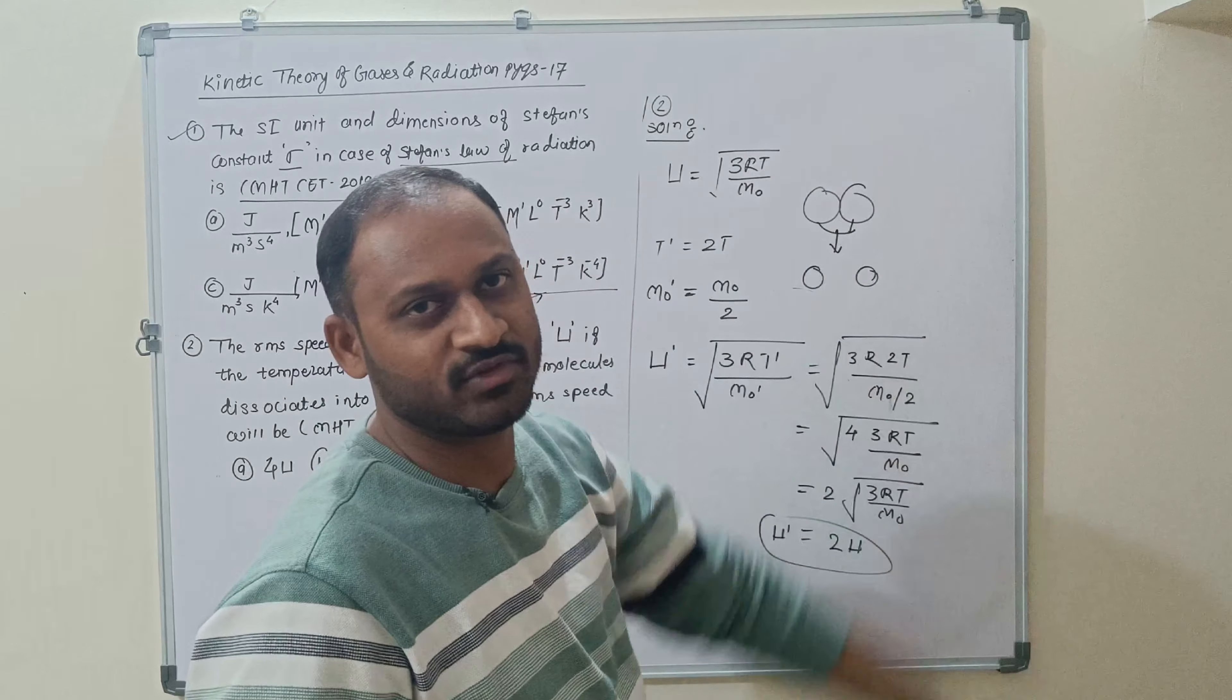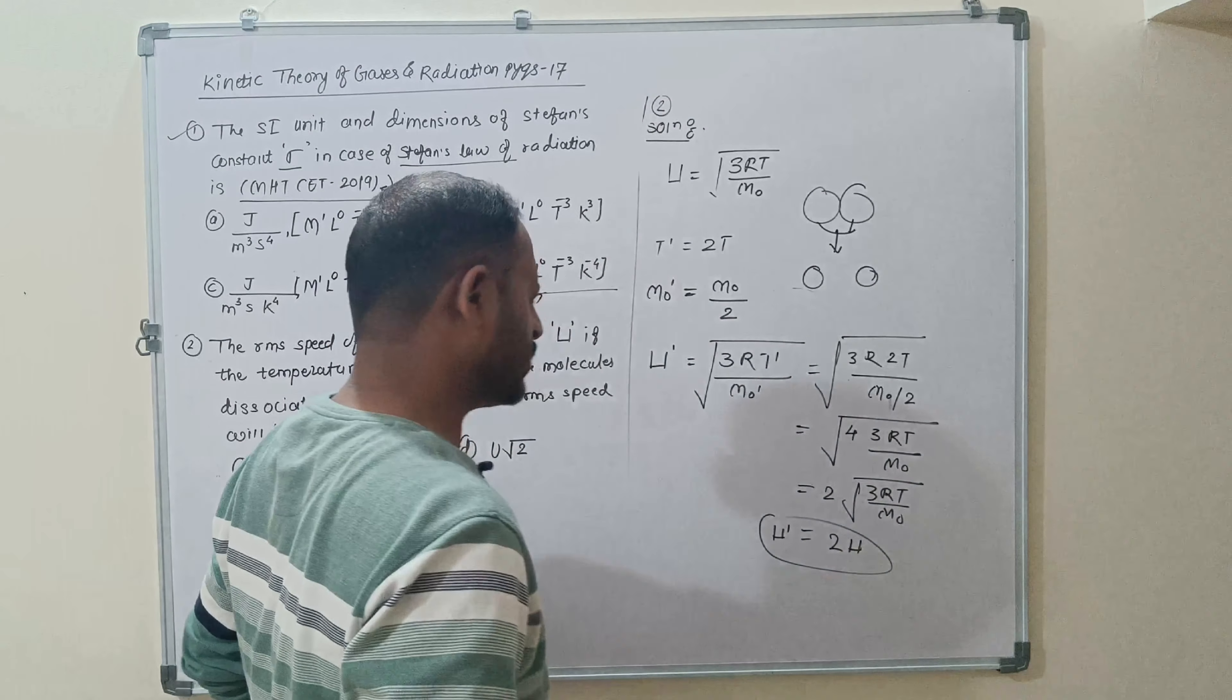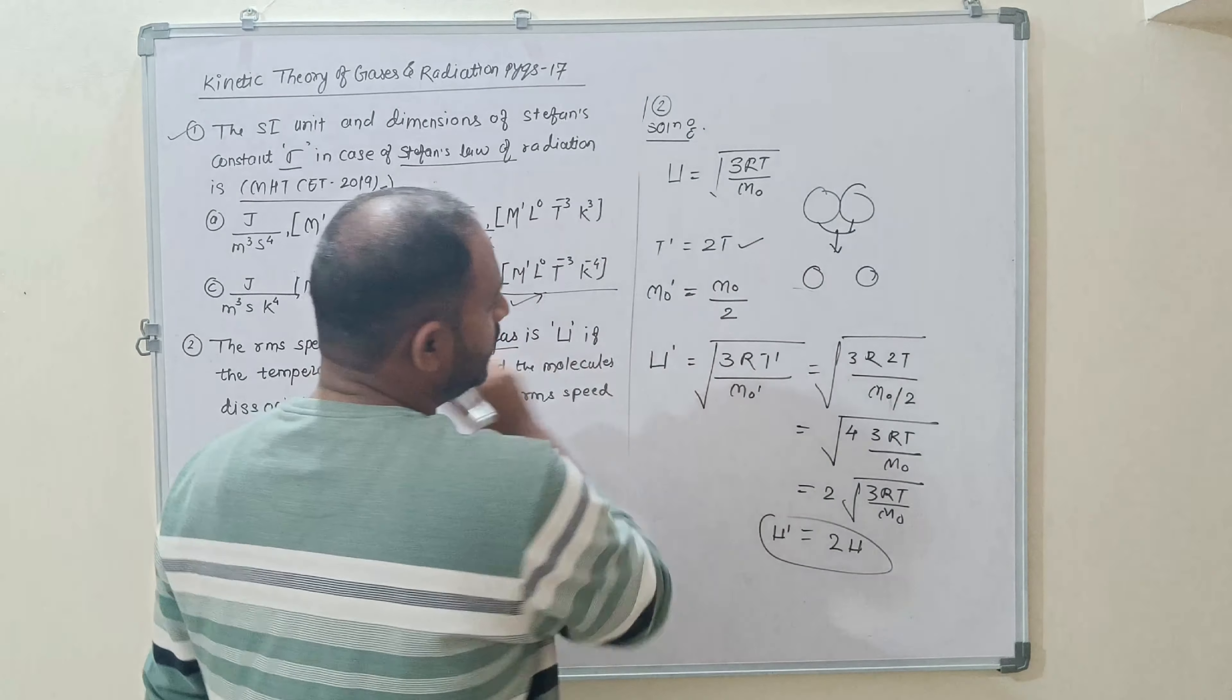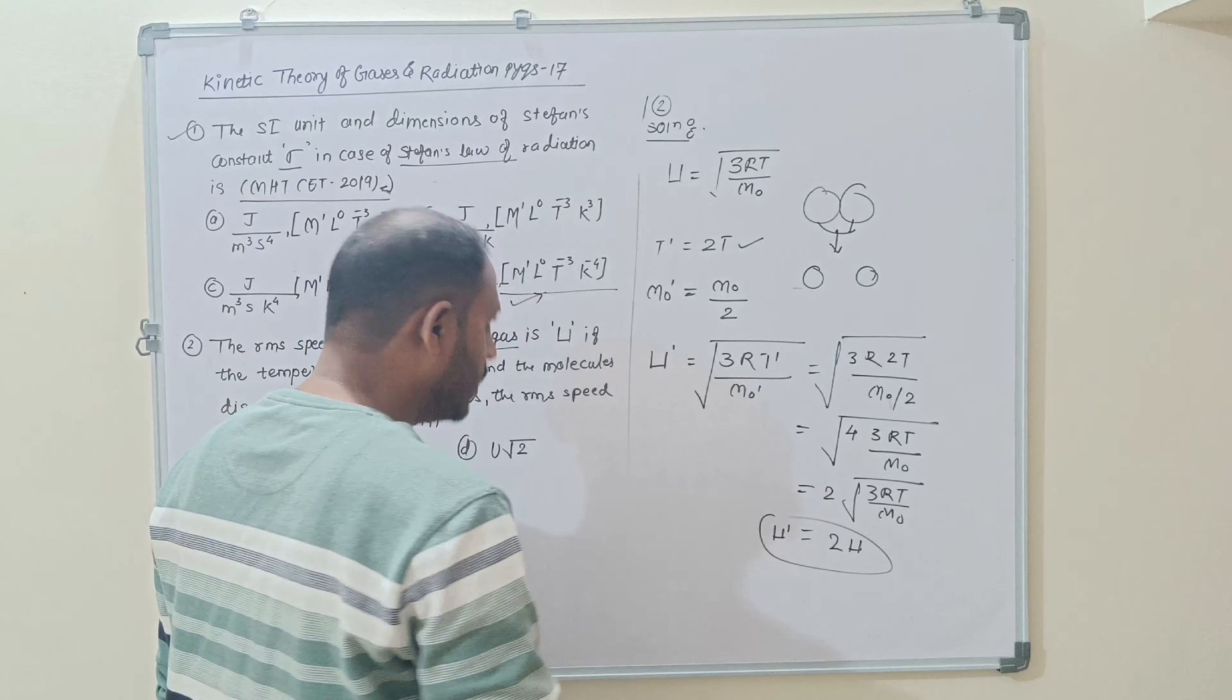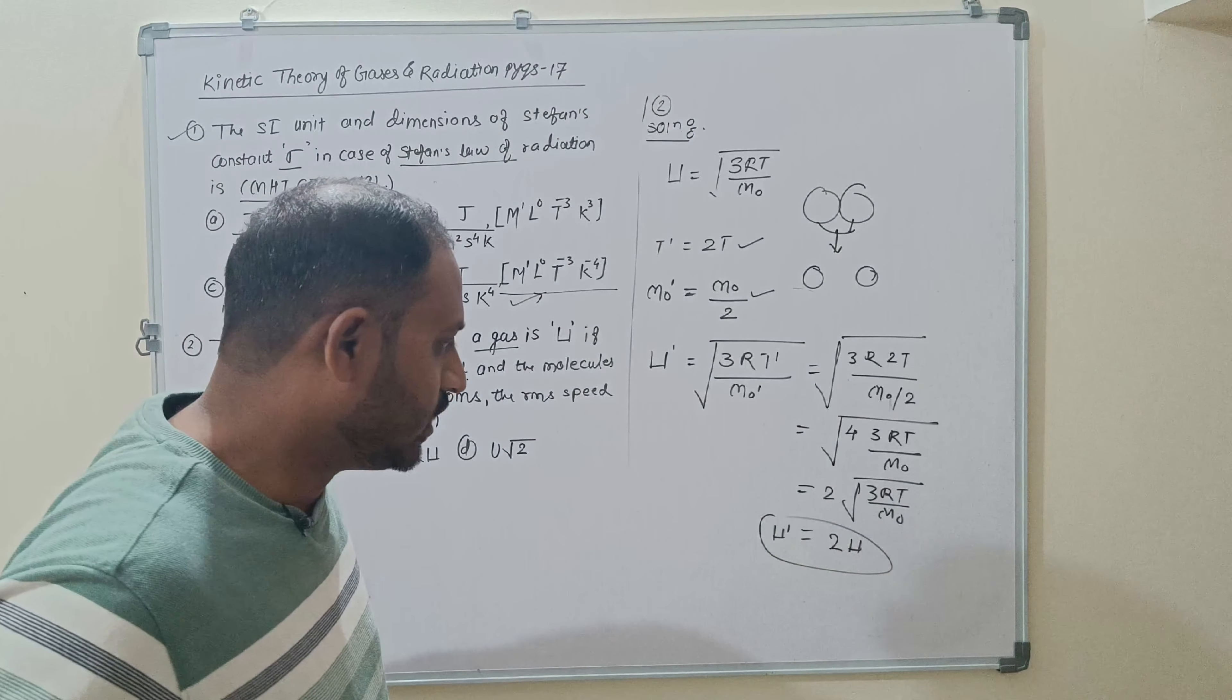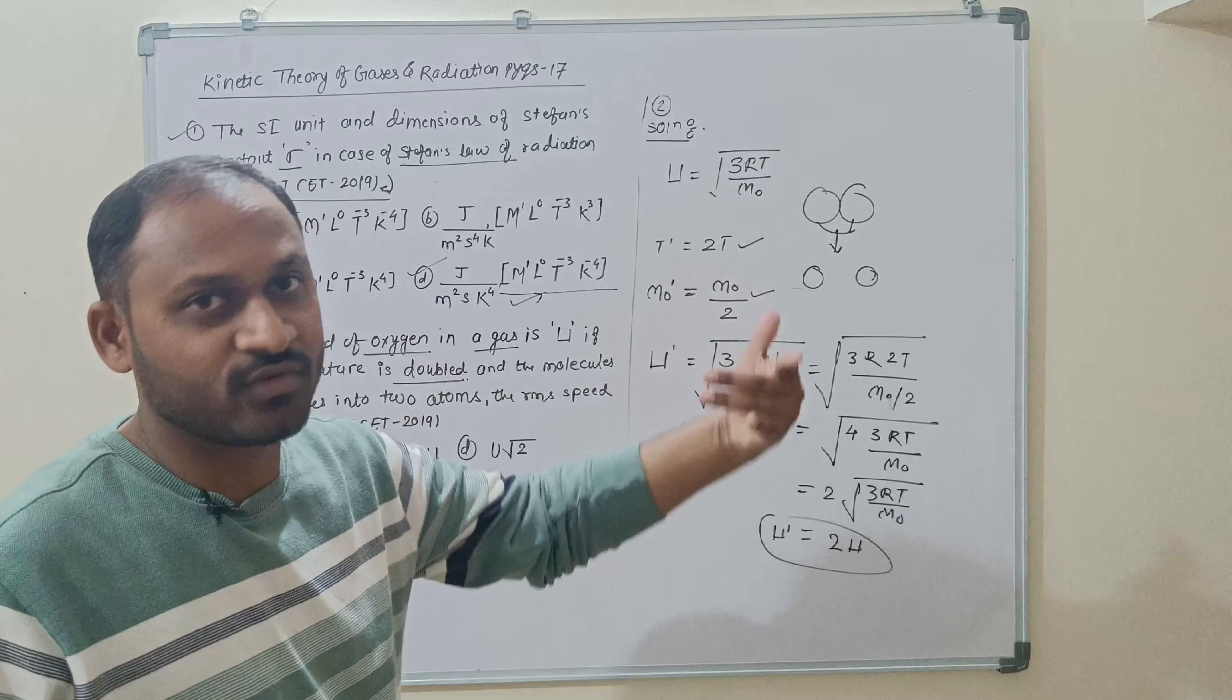So you can get the new RMS velocity. That is 2. What is temperature? Double. If the molecular weight is half, the RMS velocity is doubled.